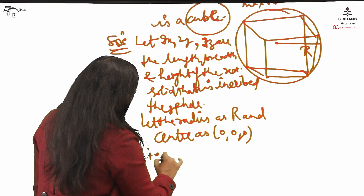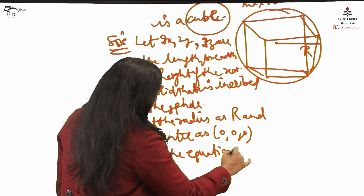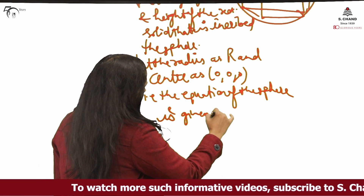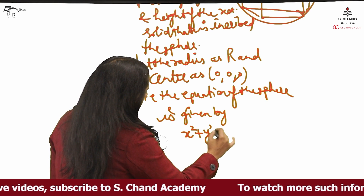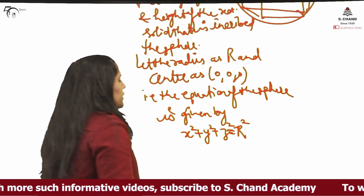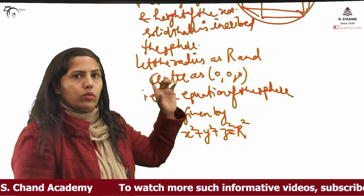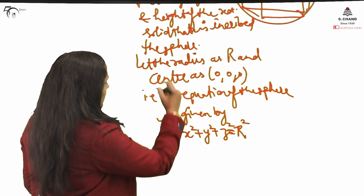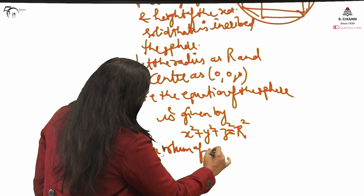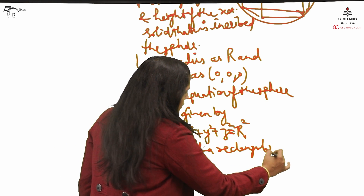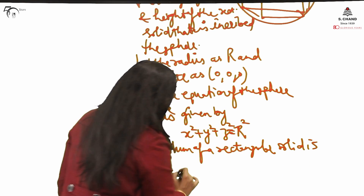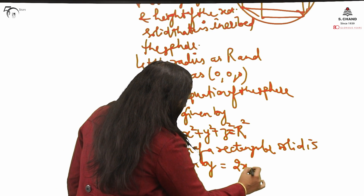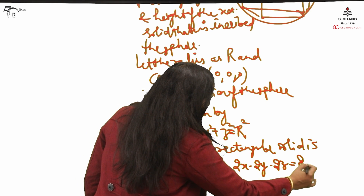The equation of the sphere is given by x² + y² + z² = r². Whenever we take a real life problem involving a sphere, I have considered the simplest sphere and I can generalize it for any sphere. The volume of a rectangular solid is length × breadth × height, which is 2x × 2y × 2z = 8xyz.